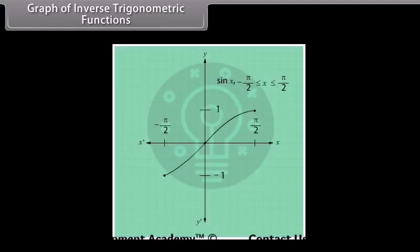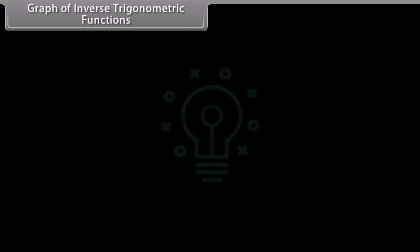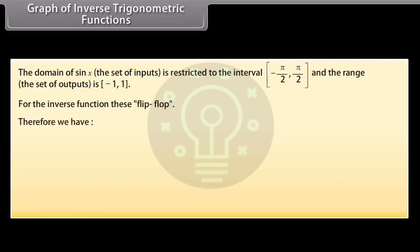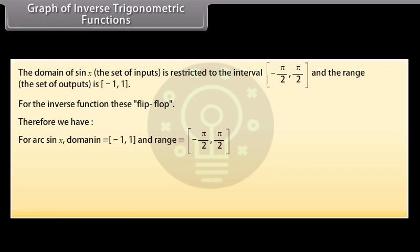We will now learn about the graphs of the inverse trigonometric functions. The domain of sin x is restricted to the interval [-π/2, π/2] and the range is [-1, 1]. For the inverse function, these flip-flop. Therefore, for arc sin x: domain = [-1, 1] and range = [-π/2, π/2]. Remember, if (a, b) is a point on the graph of f, then (b, a) is a point on the graph of f⁻¹. Using rotation and plotting some points, we obtain the graph of arc sin x.